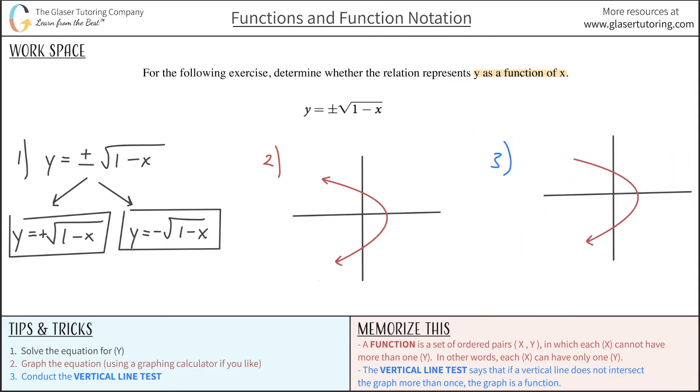And the vertical line test tells me that if the vertical line does not intersect the graph more than once, then the graph is a function. So I choose to draw this vertical line here, and I realize, oh no.